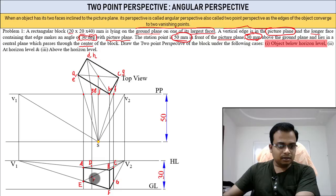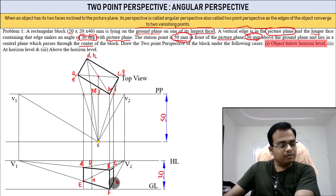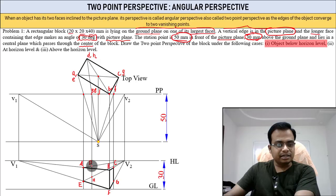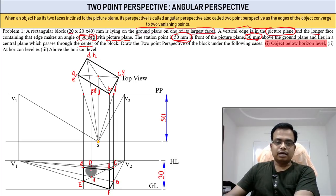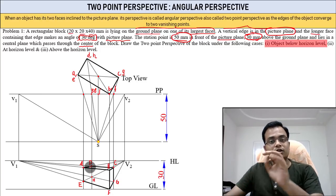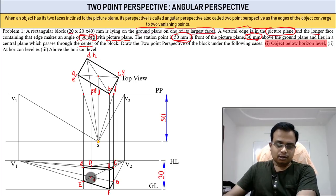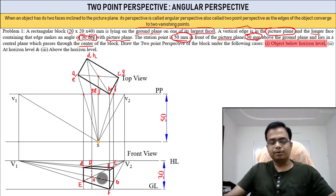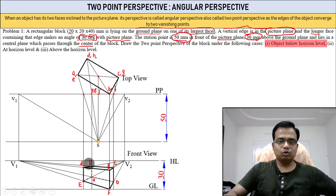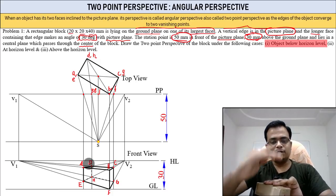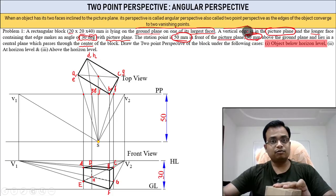This point is D and H. You could also have joined G with V1 or used other combinations — they would still intersect at the same points. Now darken the visible face, and the hidden portions get shown as hidden lines. That's the two-point perspective of the rectangular block 20×20×40.